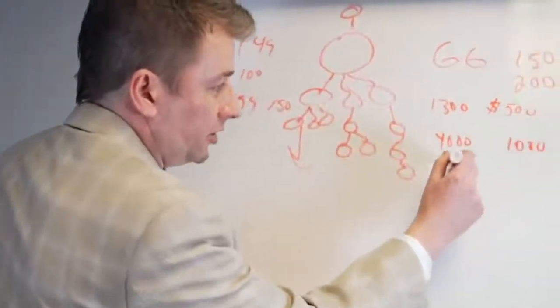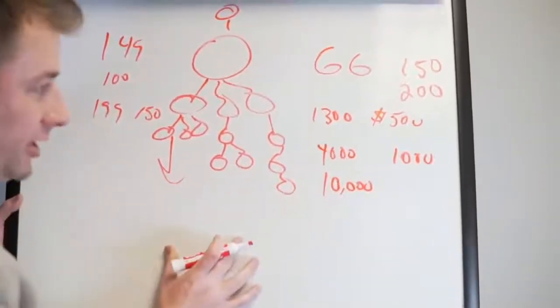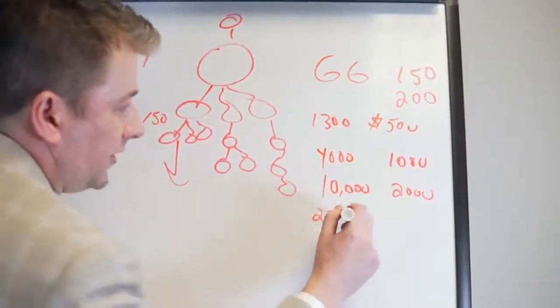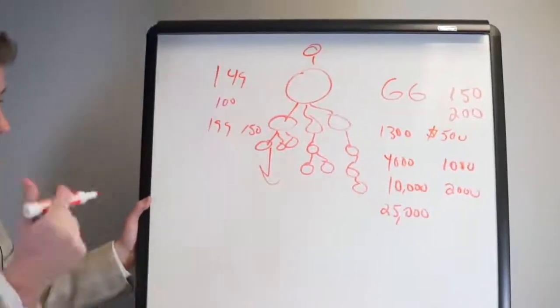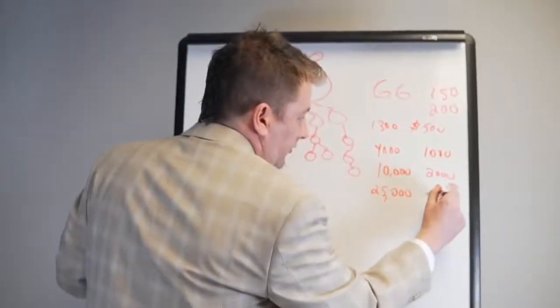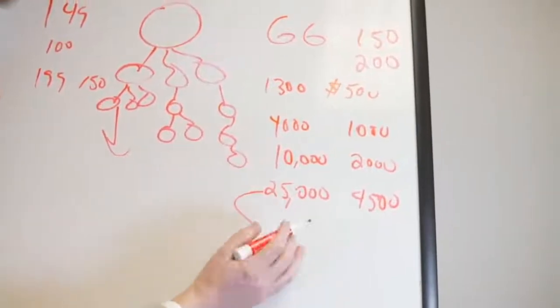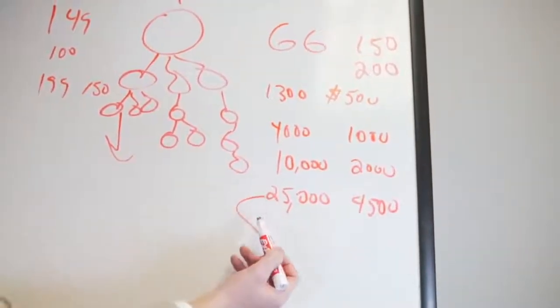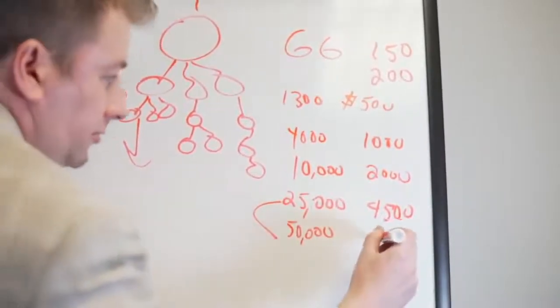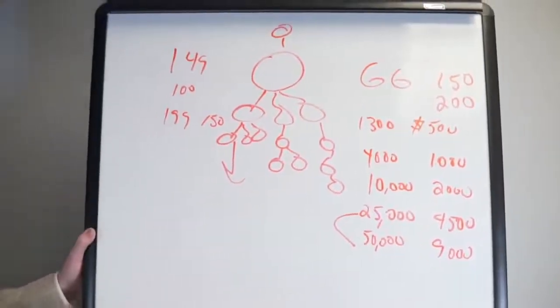From there it's very simple, the volume just keeps going up. So you do $10,000 in volume, you're making $2,000 residual. $25,000 - some people say this is maybe the best rank in the company because of the amount of volume you get for what you're getting paid - you're getting $4,500 a month. From here to here is magical because all you're doing is just doubling your business. You get to $50,000 in volume, you're at $9,000 residually, you're now making a six-figure income.